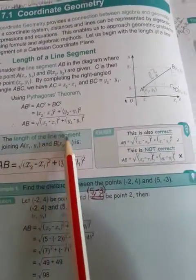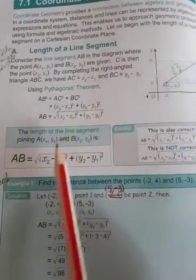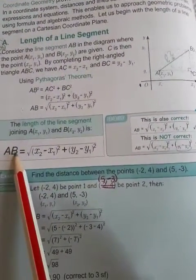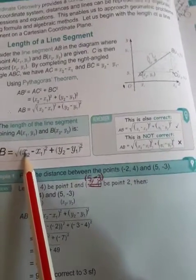Important for you to remember is that the length of a line segment is calculated. AB is always the line segment that is being asked and then you have two coordinates.